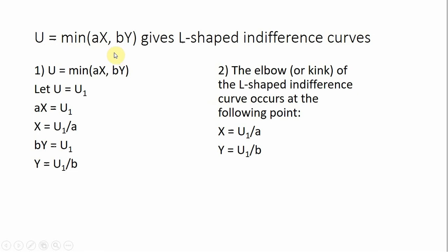Perfect complements will have a utility function displayed by this general format where utility is the minimum of either these two numbers, a times x or b times y. This type of utility function will give shape to L-shaped indifference curves, and the key to graphing these is finding the elbow on the L or where the kink of the L is.